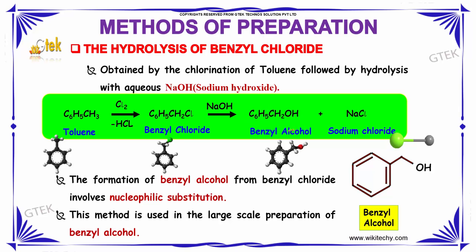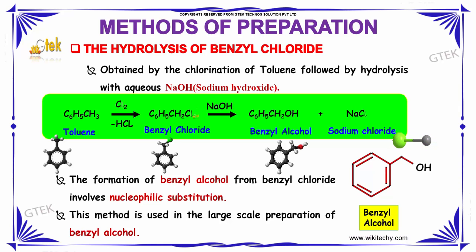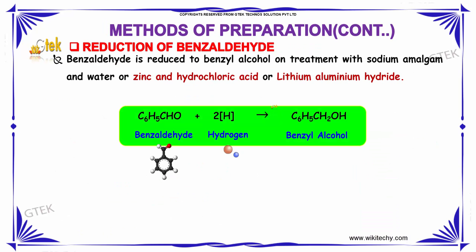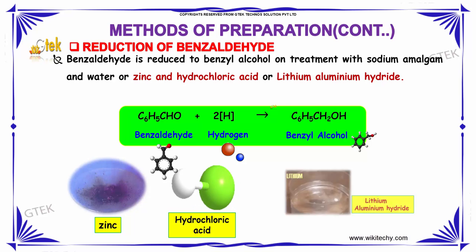The formation of benzyl alcohol from benzyl chloride involves nucleophilic substitution — the OH group attacks the chlorine and replaces it. This method is used in the large-scale preparation of benzyl alcohol.